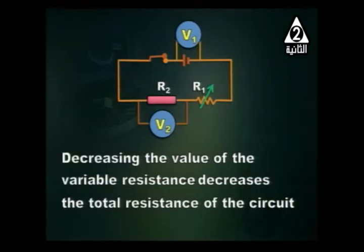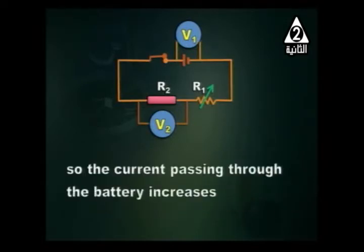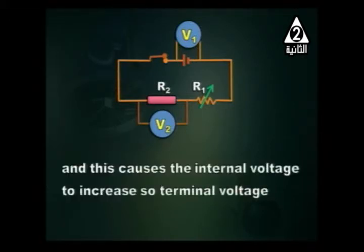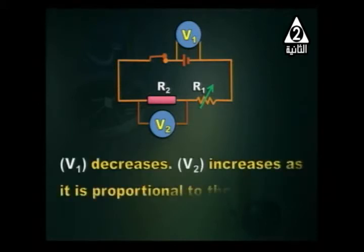In summary: decreasing the variable resistance decreases total resistance of the circuit. When R1 is decreased, total resistance decreases and current through the battery increases. This causes internal voltage to increase, so terminal voltage decreases. V2 increases because it is simply proportional to the current.